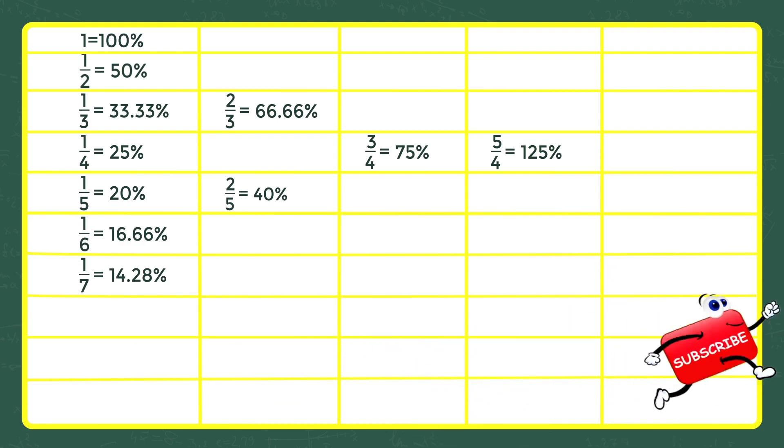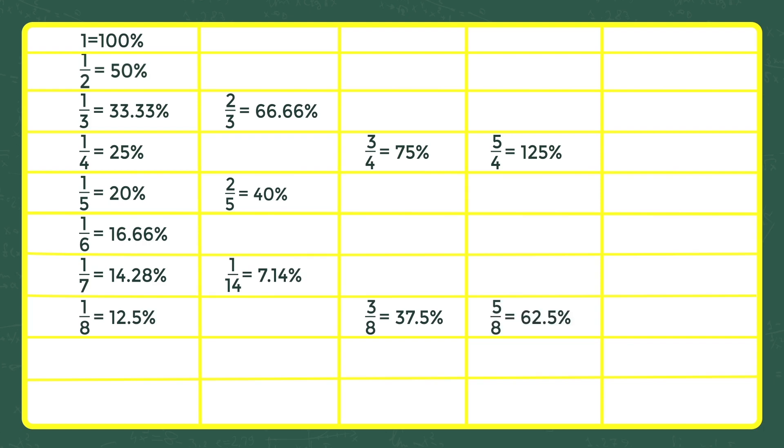1 by 14 is equal to 7.14%, 1 by 8 is equal to 12.5%, 3 by 8 is equal to 37.5%, 5 by 8 is equal to 62.5%.